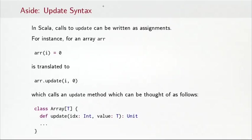So the update operation uses the name update for a reason because in fact in Scala update calls can be rewritten as assignments using some syntactic sugar. You've probably seen that already when working with arrays. For an array r, you would write r(i) = 0. And what actually happens here is that this assignment is translated to array.update(i, 0). And that would call the update method in class array which has this definition here. So update takes an index and a value of the element type of the array and returns unit.